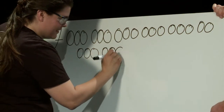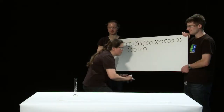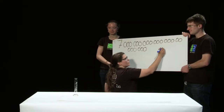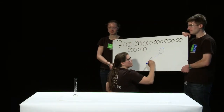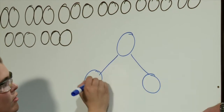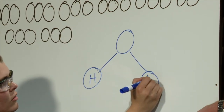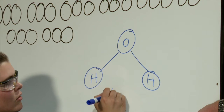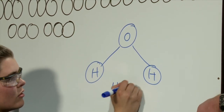All those particles, all in 20 milliliters of water. But what do they actually look like? Well, each water particle is made up of an oxygen and two hydrogens, hence the formula H2O.